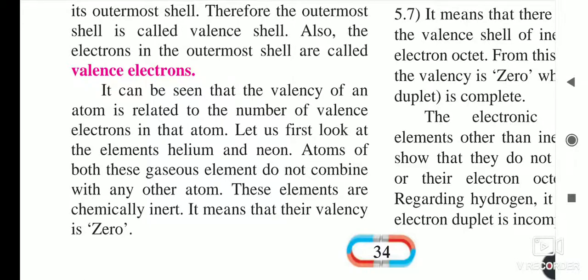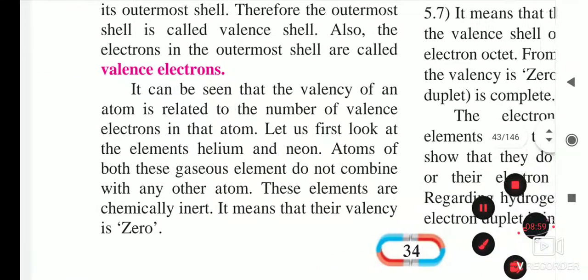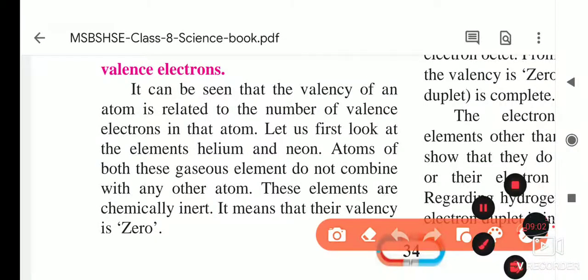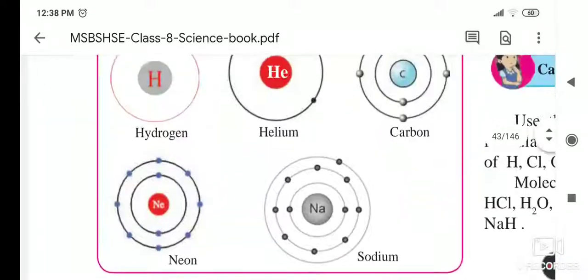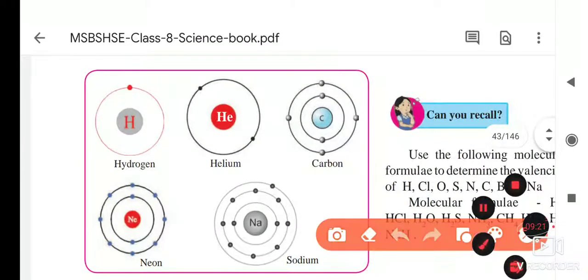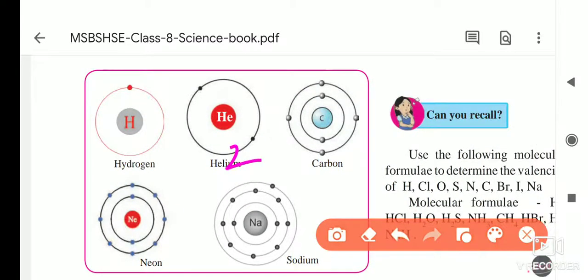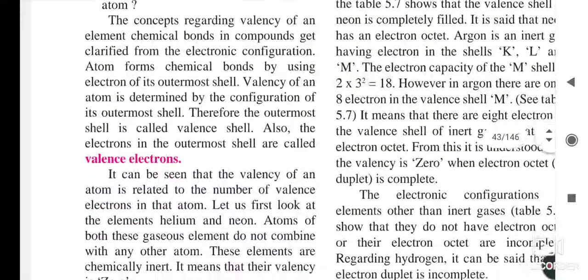It can be seen that the valency of an atom is related to the number of valence electrons in the outermost shell. The number of electrons in the outermost shell decides the valency of that element. Let us look at helium and neon — helium has 2 electrons and neon has 8 electrons in their outermost orbit, which is complete, so their valency is zero.